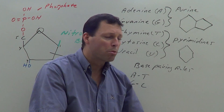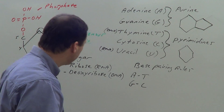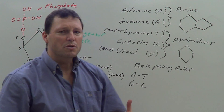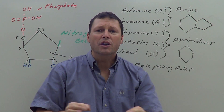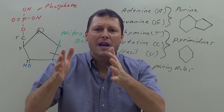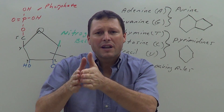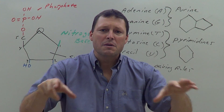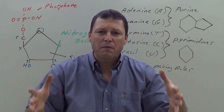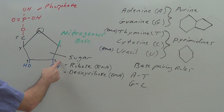Because we have five different nitrogenous bases, we have five different varieties of nucleotides. It's the sequence of those nucleotides that encodes the information used to make proteins — just like different letters make up different words, different nucleotides in sequence create biological information that is then used to make a protein.